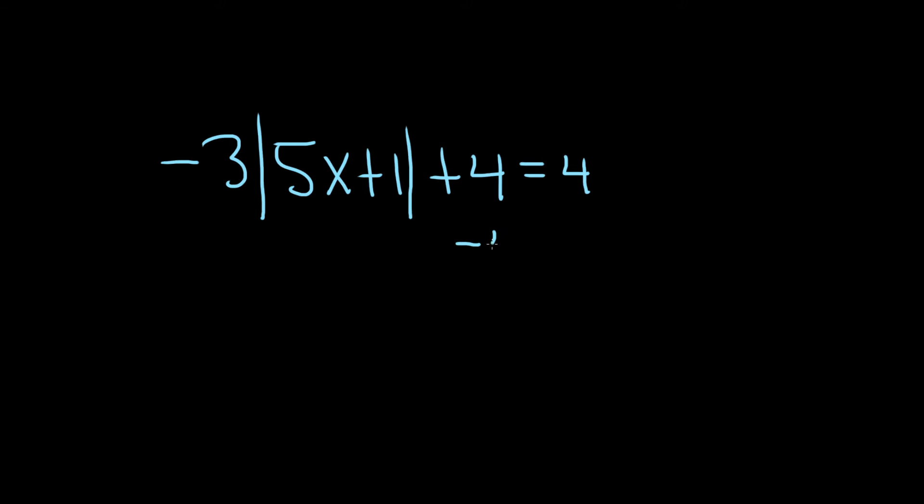We'll start by subtracting 4 from both sides. So minus 4 minus 4, that leaves us with minus 3 times the absolute value of 5x plus 1. And this is now equal to 0.